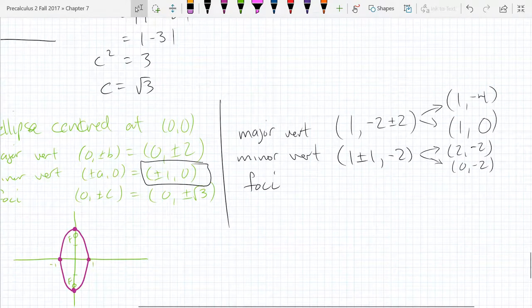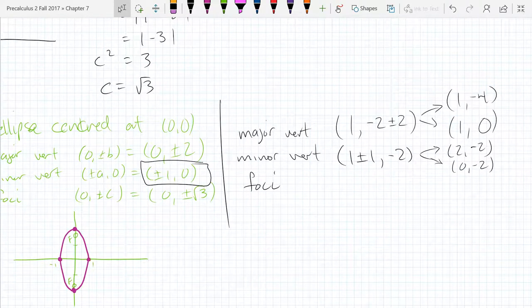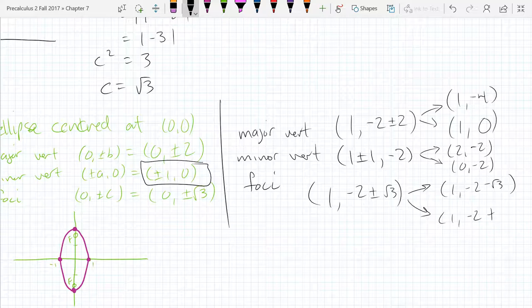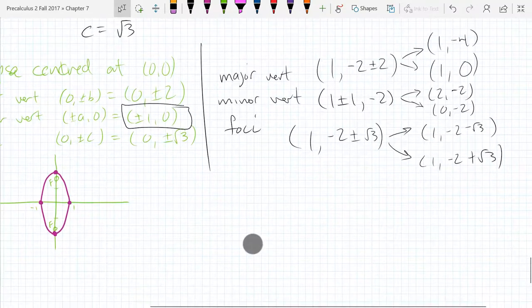And last up, foci is going to be very similar to the major vertex. So our foci is going to be 1, comma, negative 2, plus or minus square root 3. Which is 1, comma, negative 2, minus square root 3. And 1, comma, negative 2, plus square root 3. So we're ready to graph all four of these out.